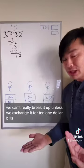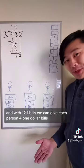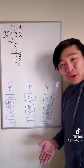it up unless we exchange it for ten one dollar bills. So this represents twelve one dollar bills, and with twelve one dollar bills we can give each person four one dollar bills.